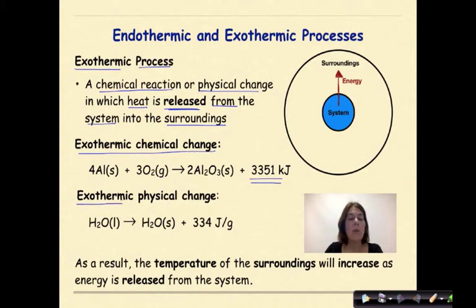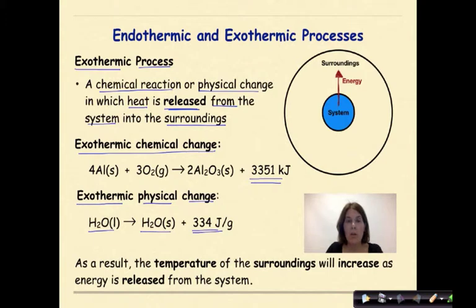An exothermic physical change could be liquid water releasing 334 joules per every one gram of liquid water to form ice. This is an example of a physical change that is exothermic. As a result, the temperature of the surroundings will increase, which we could measure with a thermometer, as energy is released from the system.